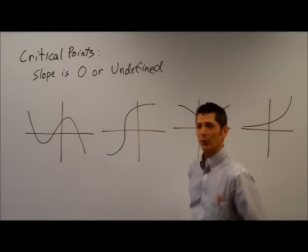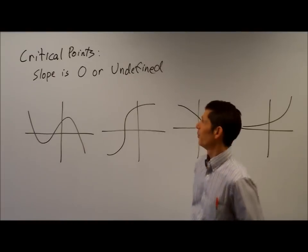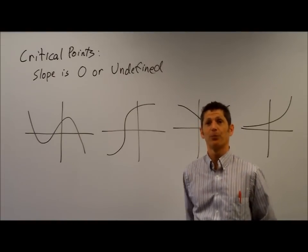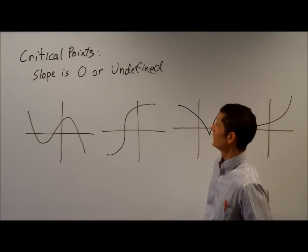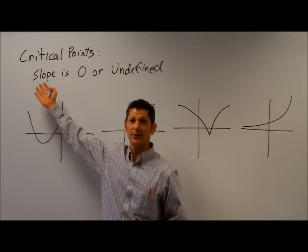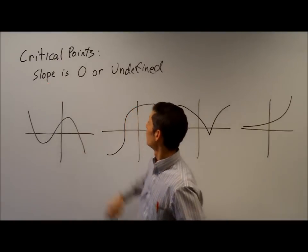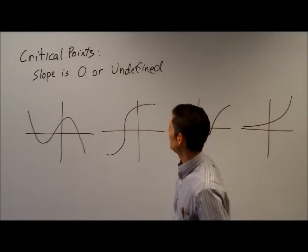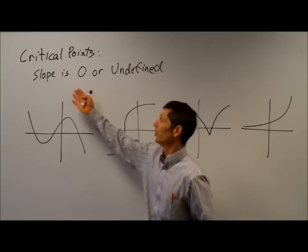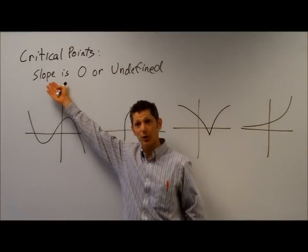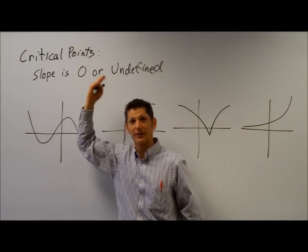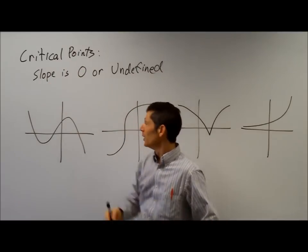So the first term — and these terms are really very straightforward — the first term is a critical point, or critical points. These are places on a function where the slope is either zero or undefined, or where the derivative is either zero or undefined. That's how you're going to end up finding them.